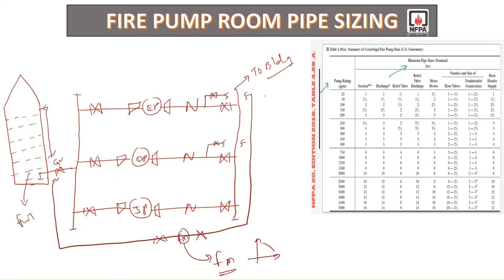Apart from this, we have one more line going to the controllers. A sensing line from the diesel discharge goes to the diesel controller, from the electric discharge line a sensing line goes to the electric pump controller, and from the jockey side it goes to the jockey controller.